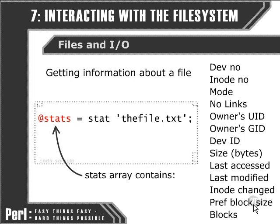The STAT array contains a whole set of elements. The device number is the media on which the file is stored. The inode number is a unique identifier to locate that file within the hard disk or wherever it's stored. The mode contains permissions regarding who is able to work with the file — who is able to read it, write it, execute it, and so on.